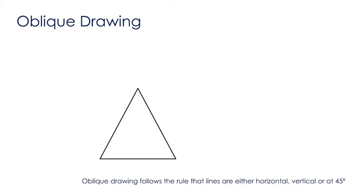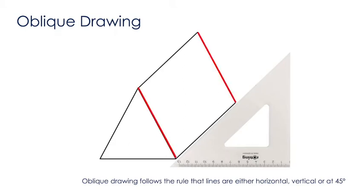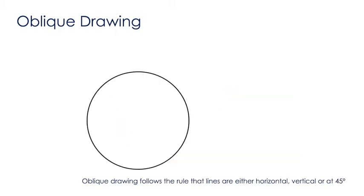Other simple prisms can be drawn in the same way. So we start off with the front face and bring it back at 45 degrees, making sure that these lines are parallel. Or we can just as easily create a cylinder using circles as the front and back faces.